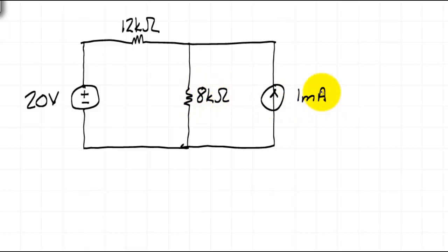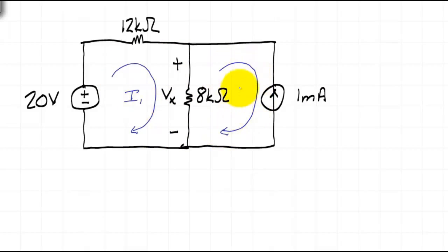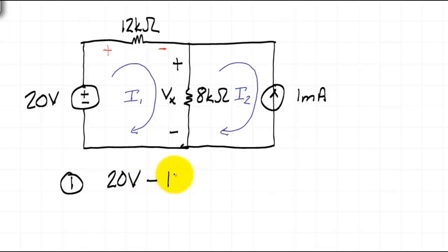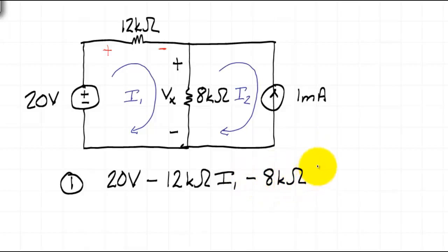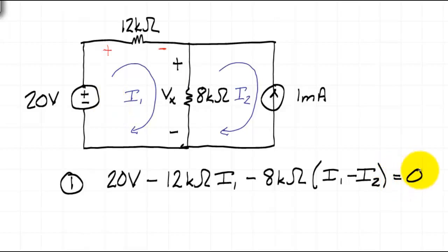For this circuit, say we're trying to determine the voltage Vx. I'll define two mesh currents I1 and I2, then indicate the polarity of voltages across the resistors. For loop 1, beginning in the lower left-hand corner, we see an increase of 20V — positive 20 in the equation. Continuing across the 12kΩ resistor, there's a voltage drop of minus 12kΩ times I1. Since the voltage Vx across the 8kΩ resistor goes from positive to negative, it will be a drop of 8kΩ times I1 minus I2, because I1 agrees with the passive sign convention. That completes the loop and voltages must add to zero.